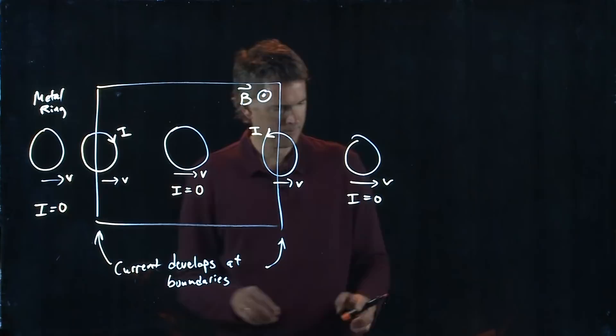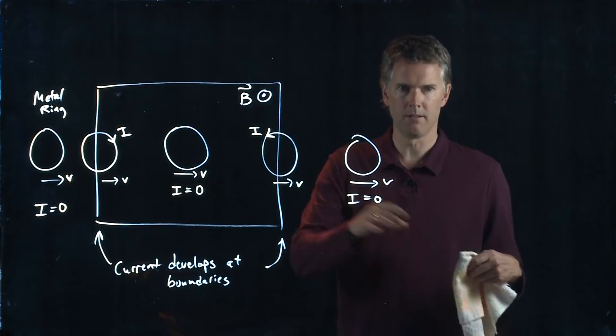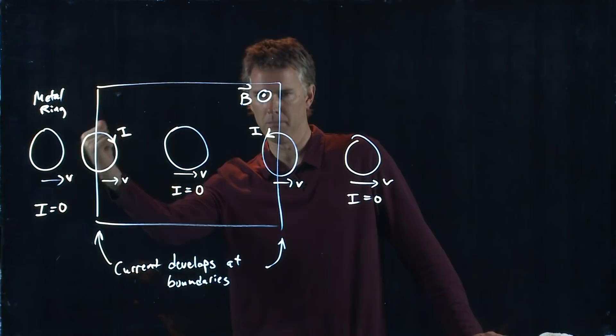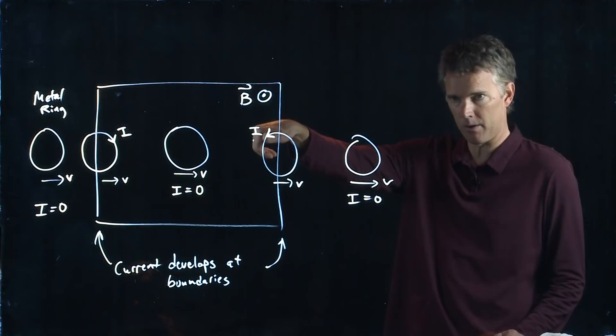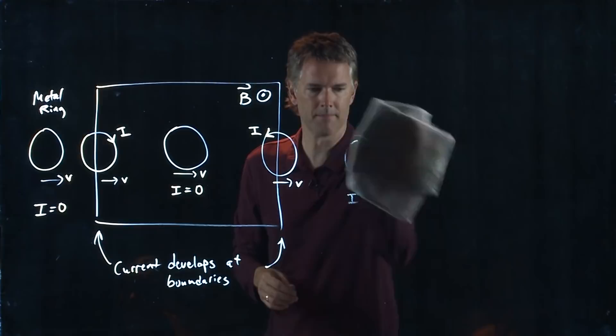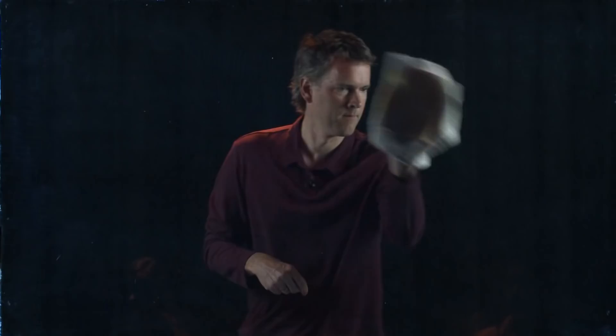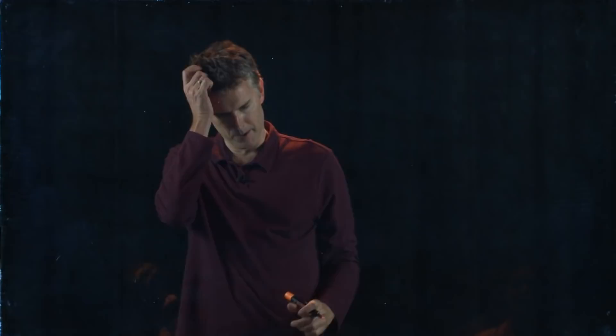Any questions about that? If I wrap my fingers this way I get B pointing into the screen; wrapping this way gives B pointing out of the screen. The only time current develops is at these boundaries. Anywhere the field is uniform or zero, there is no current that develops in the loop.